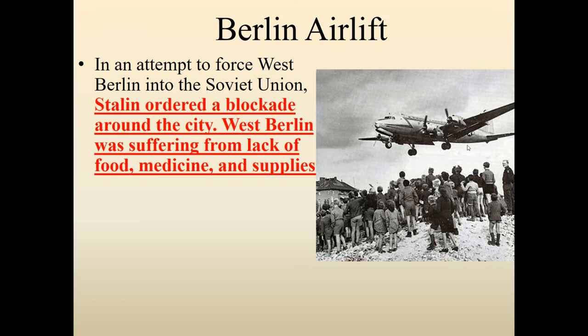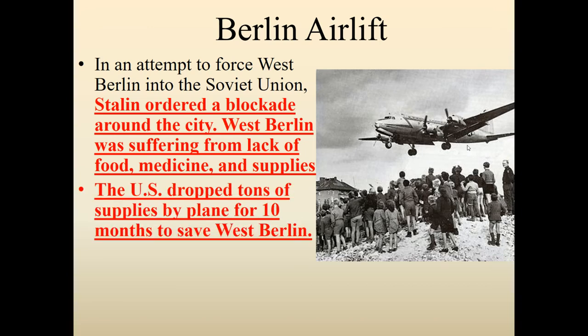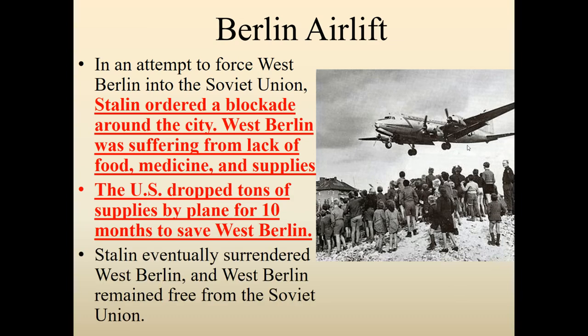Stalin did this to force West Berlin into his control. But the U.S. and their policy of containment — not letting communism spread, trying to protect democracy in West Berlin — ended up dropping tons of supplies over West Berlin for a total of 10 months. Food, medicine — on Christmas they even dropped presents for the kids — and did not let West Berlin starve. When the U.S. did this for 10 months, think about the cost of the Berlin airlift. Eventually, Stalin surrendered West Berlin and did not occupy it. The fact that the U.S. prevented West Berlin from falling to communism technically makes this a success for containment — the U.S. prevented the spread of communism.